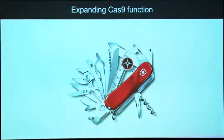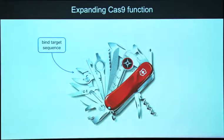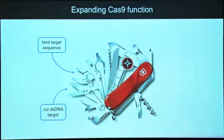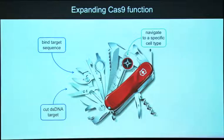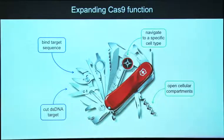That sounds like a wonderful array of capabilities, but it doesn't exist yet. What I'm going to talk about today is our attempts to engineer the extra functions onto Cas9. Cas9 comes with two great properties built in: you can program it using its guide RNA to bind any target sequence you want, and the protein component is responsible for cutting the DNA and initiating genome editing. The two other abilities we want to build in are the ability to navigate to a specific cell and be taken up, and then open up cellular compartments to let it get to the nucleus and do the genome editing that can enact therapeutic change.